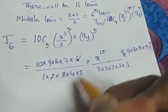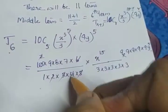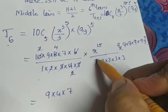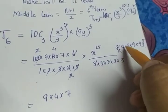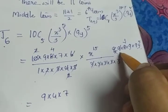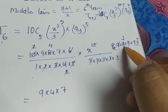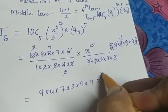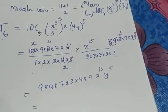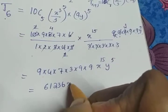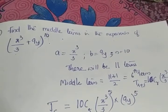Cancelling: 2×3=6, 5×2=10, 2 and 4 cancel giving 2, 2 and 8 cancel giving 4, leaving 9×4×7. The five 3's in the denominator cancel with factors from the five 9's, leaving 3×9×9. The final result is 61236 × x^15 × y^5, which is the middle term of the expansion (x³/3 + 9y)^10.